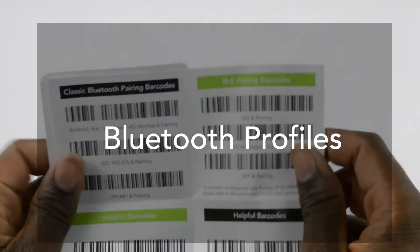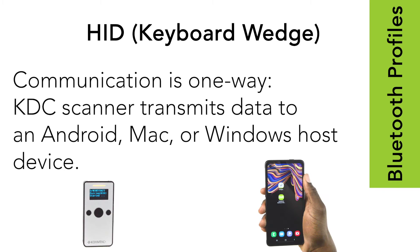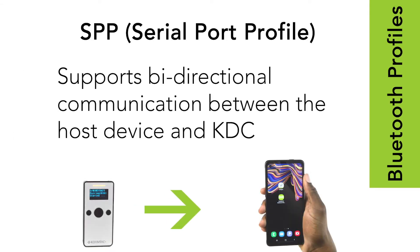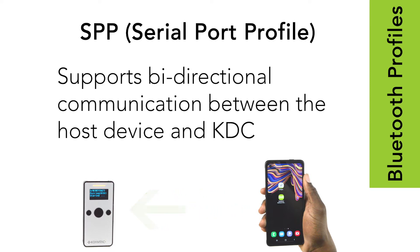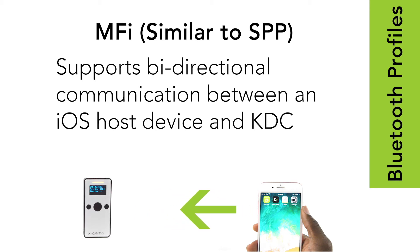Bluetooth Profiles. For HID, or keyboard wedge, the communication is one-way — data is being transferred from your scanner to your host device. For SPP, or serial port profile, the communication is two-way: data is transferred to your host device, and the host device can send info back to your scanner. For MFI, it is very similar to SPP, but strictly for iOS devices.